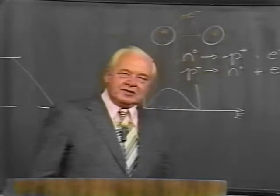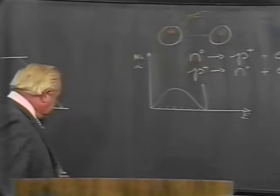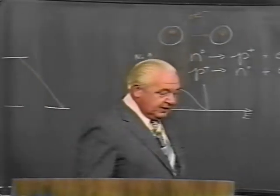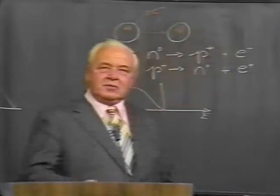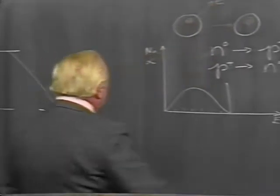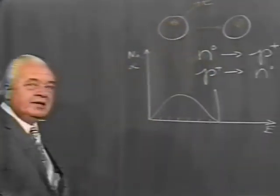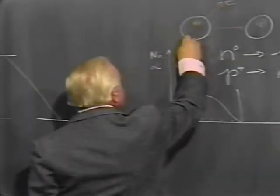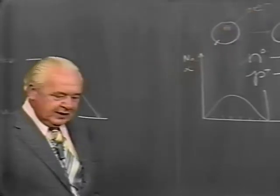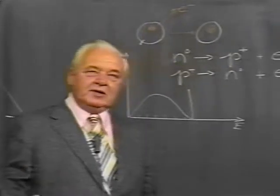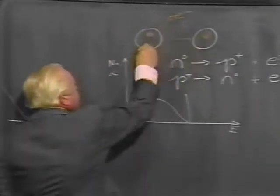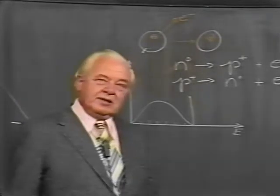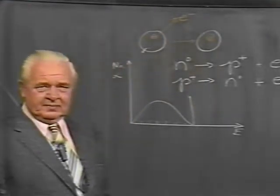Now, this caused great concern among physicists. People used their most sensitive equipment to try to find where this energy was going to and failed. Not only was energy being, was missing from this, but also momentum was missing. If one started out with this neutron at rest, this nucleus at rest, then one had an electron shooting off with some momentum in one direction and the nucleus recoiling a little bit in the other direction.